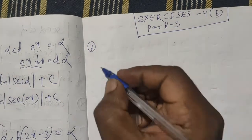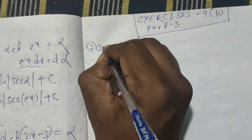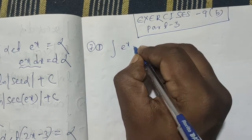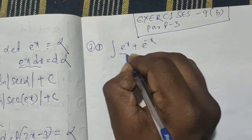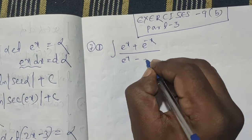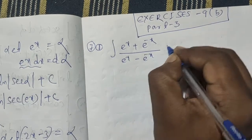The first question is: e to the power x plus e to the power minus x, whole divided by e to the power x minus e to the power minus x, dx.